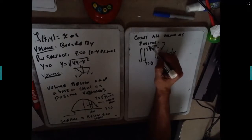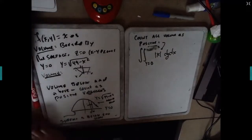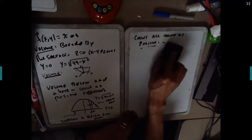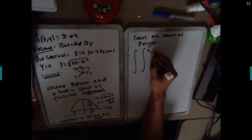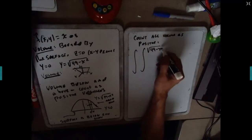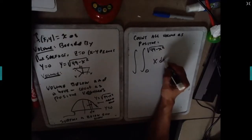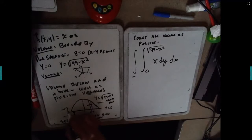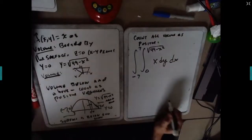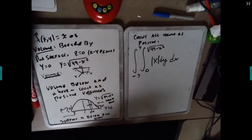So this is y equals zero to the square root of 49 minus x squared. Let me make this bigger. The square root of 49 minus x squared, zero. I'm going to integrate absolute x dy dx, and this goes from 0 to 7.